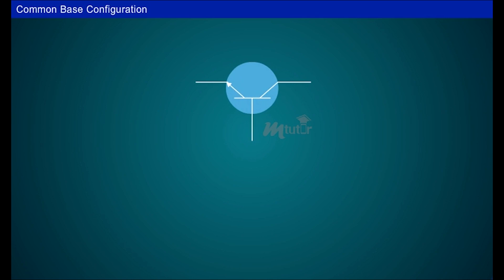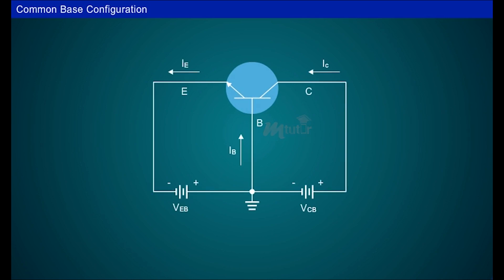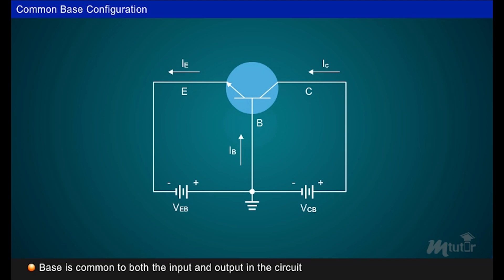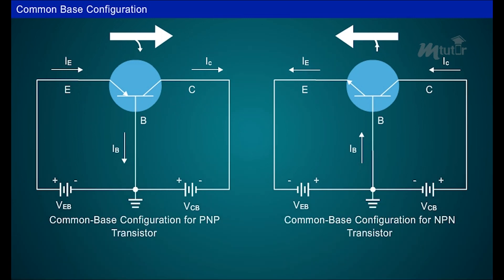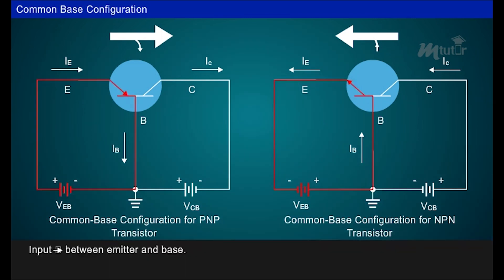The common base terminology is derived from the fact that the base is common to both the input and output sides of the configuration. In addition, the base is usually the terminal closest to or at ground potential. In this configuration, input is applied between emitter and base and output is taken from the collector and base.